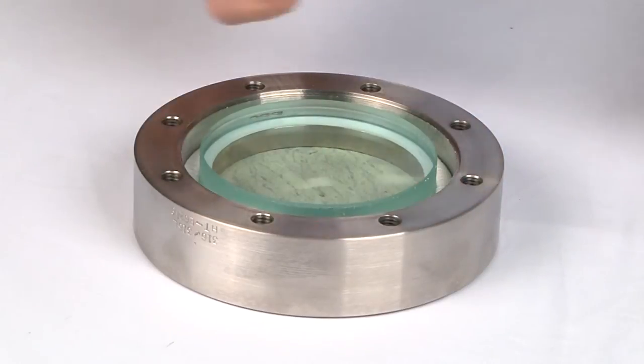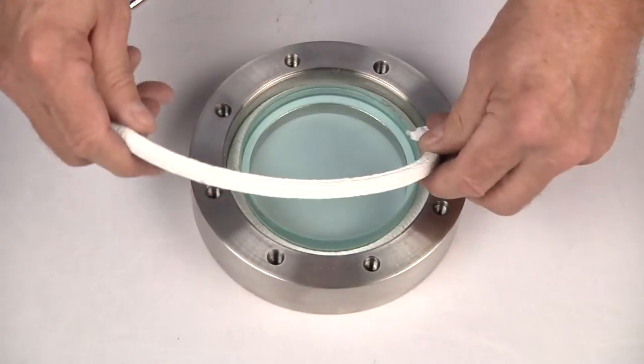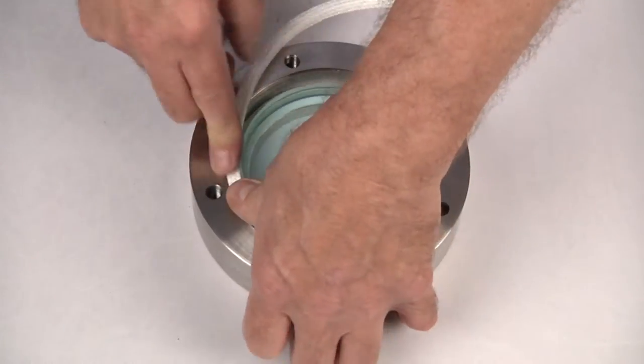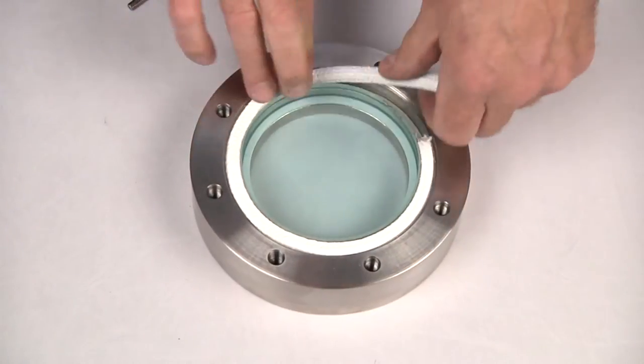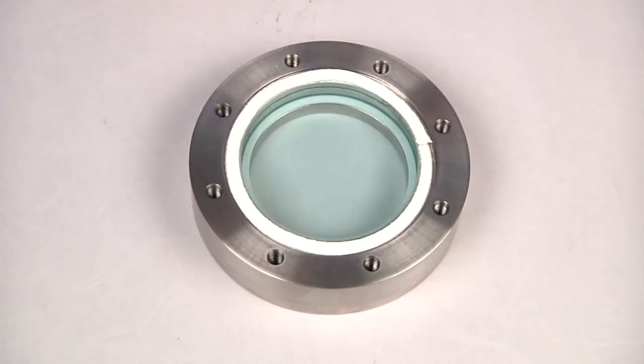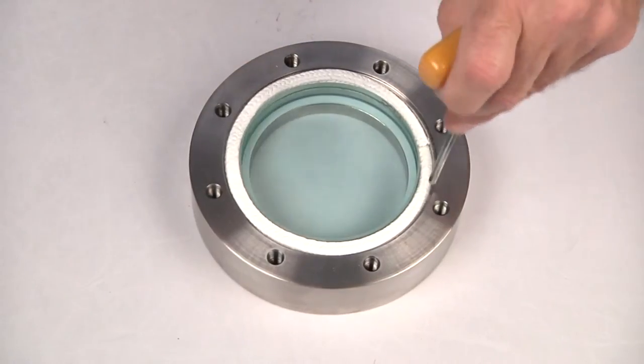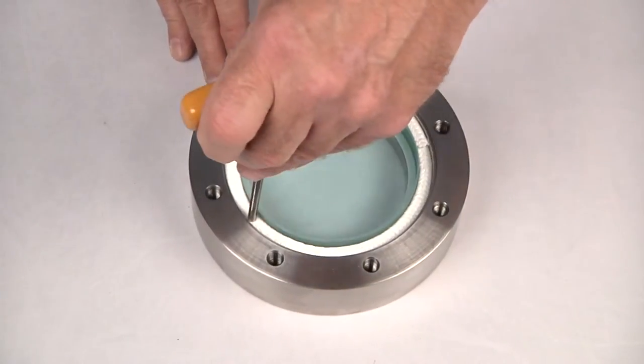The next packing seam should be 180 degrees away from the first seam. As you continue, make sure the packing seams do not line up with each other. You may need to hold out one piece of packing until the packing has been compressed.